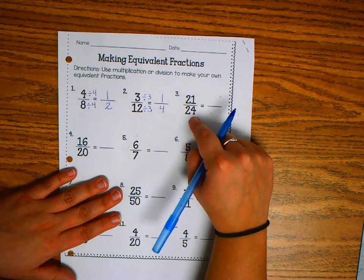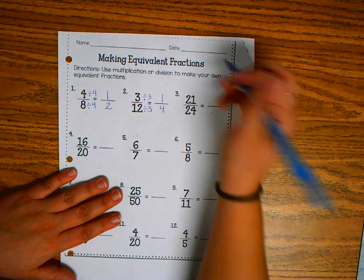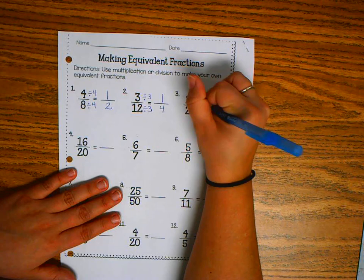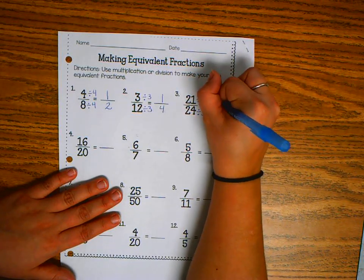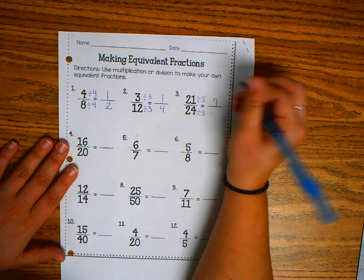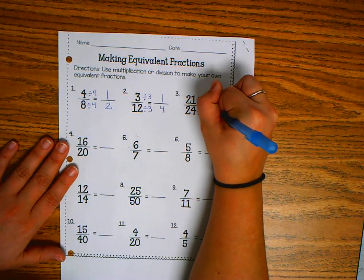21 twenty-fourths. I can also divide by 3, because 21 divided by 3 is 7. 24 divided by 3 is 8.